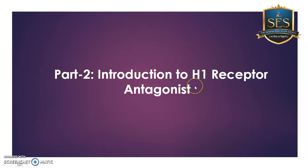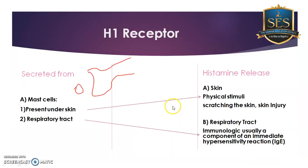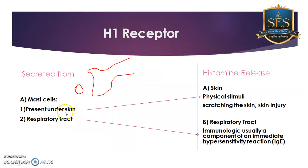Hello, my dear students, welcome to this anti-histaminic series. In part two, we are seeing the introduction of H1 receptor antagonists. As I discussed in the last lecture, histamine is released from mast cells, and these mast cells are located in the skin as well as in the respiratory tract.